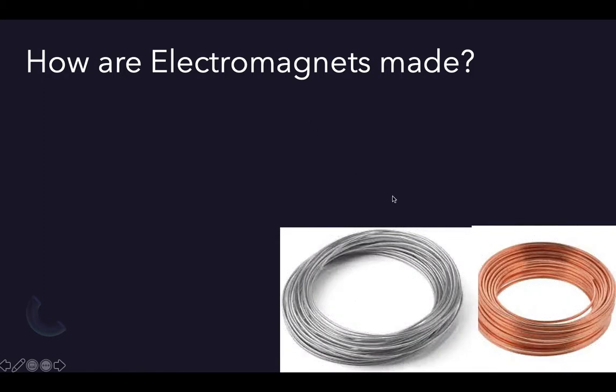How are electromagnets made? Well, all you need is a wire. It can be aluminum wire or copper wire, and if you don't have either of them you can just get an aluminum foil and wrap that into a wire. Then you need a screw.